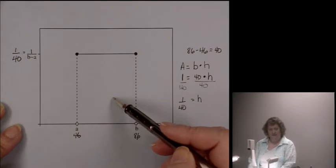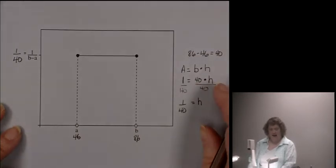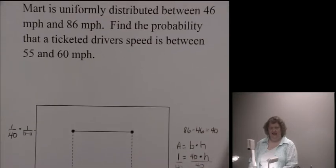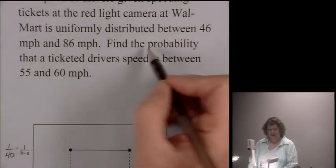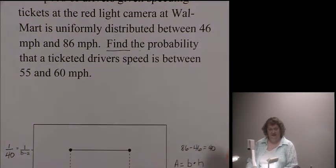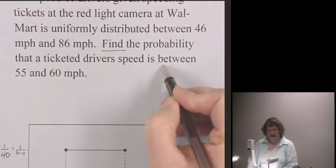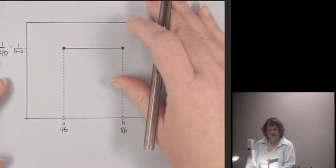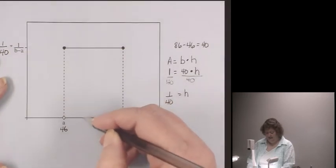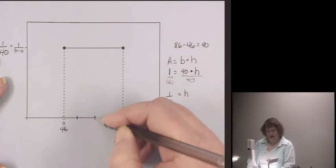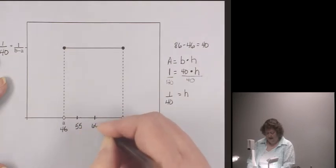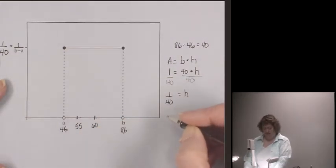But our problem wasn't to figure out what our distribution looked like. Our problem asked us to do something. And as you read word problems, it's always to find the action verb. English language here told us to find. So it said to find the probability of what? That a ticketed driver's speed is between 55 and 60. Well, 55 and 60 would fall between somewhere here and here. And I don't have to be accurate in scale. I just have to know that 55 and 60 would fall in between somewhere in my graph.